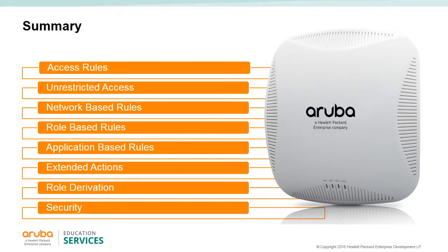In this module we saw the access rules and the difference between unrestricted access, network-based rules, and role-based rules. We also saw application-based rules and the extended actions that can be added. We saw how role derivation can happen from servers and the advantage of ClearPass servers. We also looked at the security settings where firewall rules for voice and uplinks can be set.